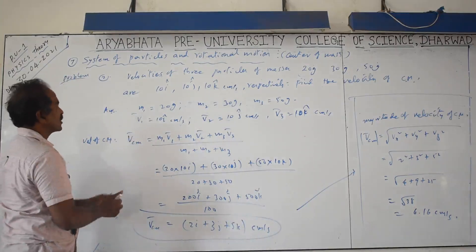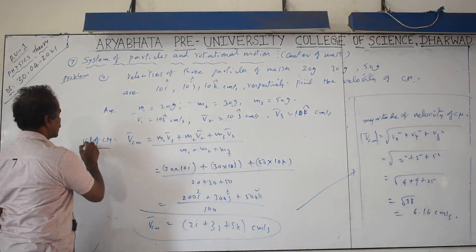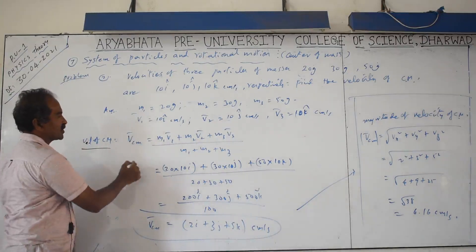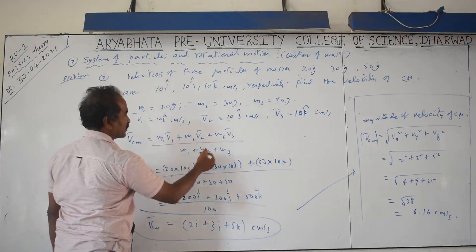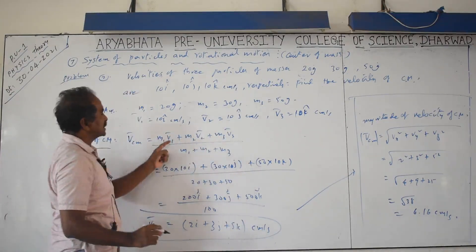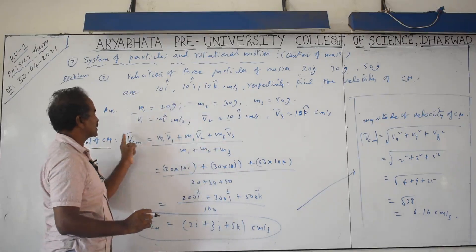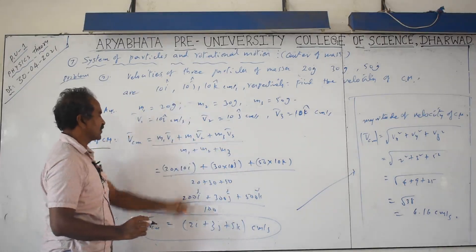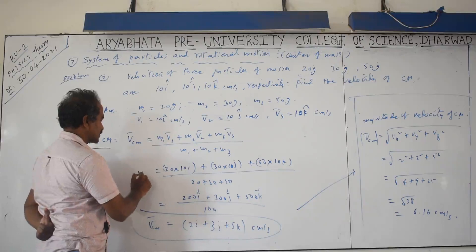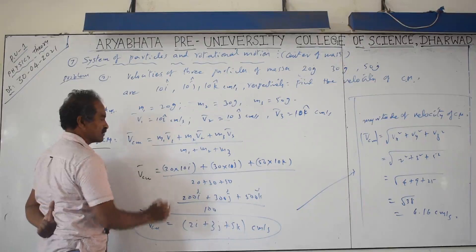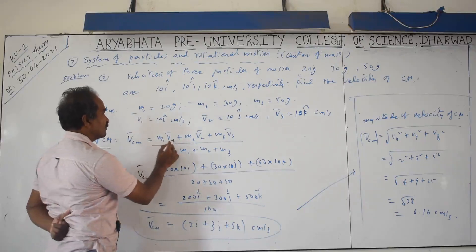Next, find the velocity of center of mass. The formula is: v_cm = (m1·v1 + m2·v2 + m3·v3) / (m1 + m2 + m3). Since velocities are given in vector form, we represent them with vector notation. The denominator is always the total mass.